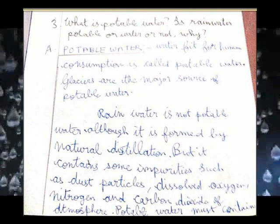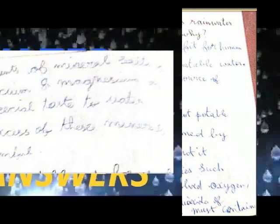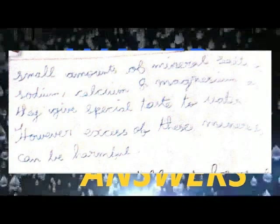Long answer, question 3: What is potable water? Is rainwater potable or not? Water fit for human consumption is called potable water. Glaciers are the major source of potable water. Rainwater is thought to be potable water although it is formed by natural distillation, but it contains some impurities such as gas particles, dissolved oxygen, nitrogen, and carbon dioxide from the atmosphere. Potable water must contain small amounts of minerals such as salts of sodium, calcium, and magnesium, as these give a special taste to water, but excess of these minerals can be harmful.